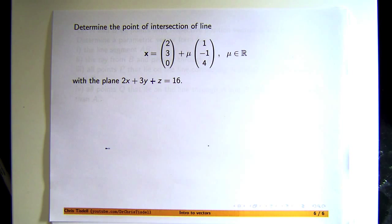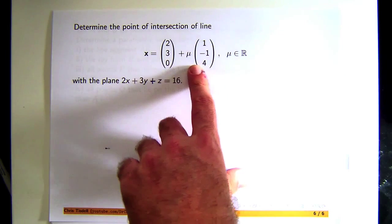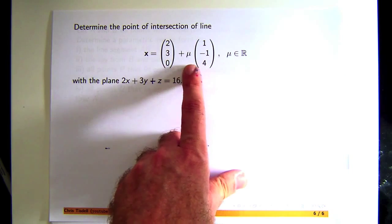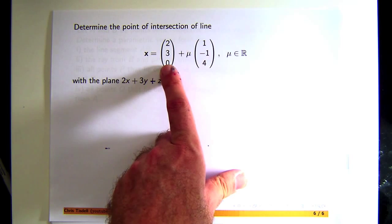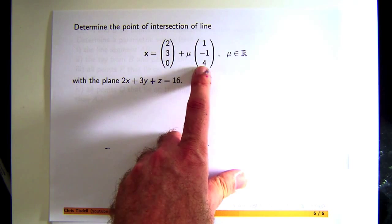Here we are asked to determine the point of intersection of the following line with a given plane. Now let's just remember what we've got here is a parametric vector form of a line that passes through the point and is parallel to the vector.